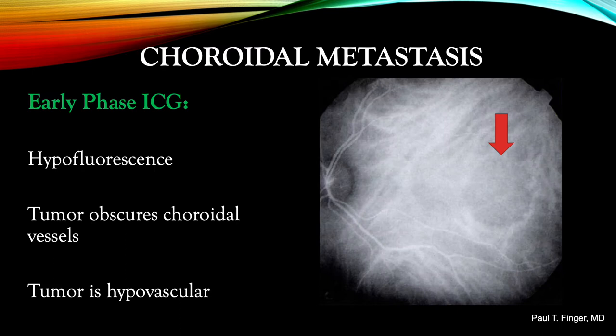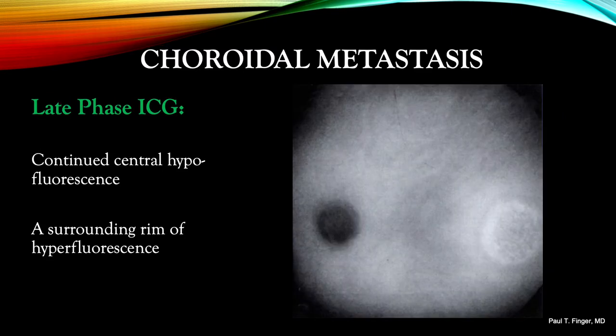Indocyanine green angiography highlights the choroidal circulation. Like with fluorescein, the poorly formed metastatic choroidal tumor blood vessels are slow to pick up the dye, and thus relatively hypofluorescent as seen at the end of the red arrow. In the late phase ICG angiogram, the overlying retinal vessels are no longer visible. The peripheral aspects of the tumor have retained their dye and are thus hyperfluorescent, while the central aspect of the tumor still appears relatively hypofluorescent.